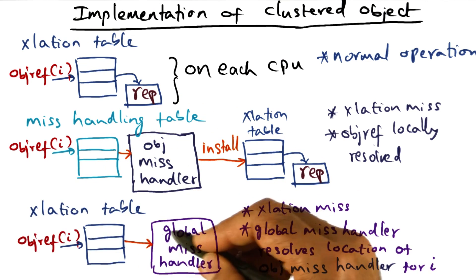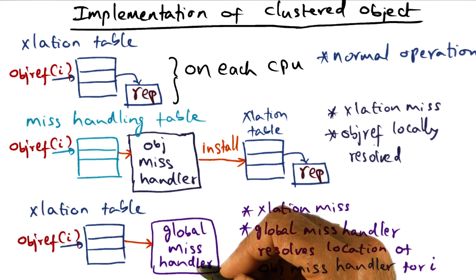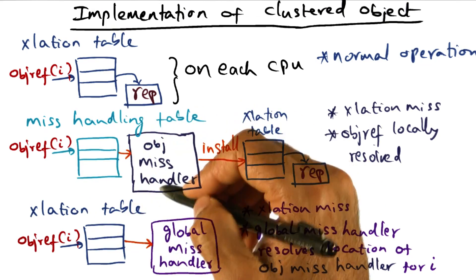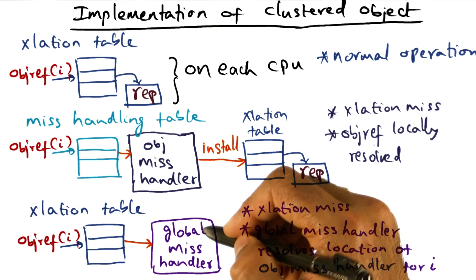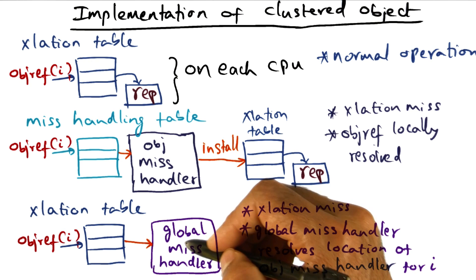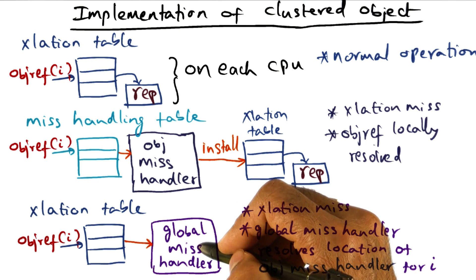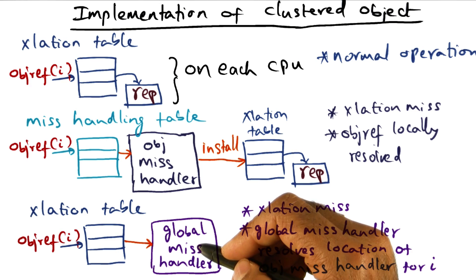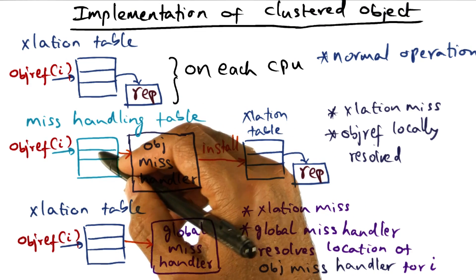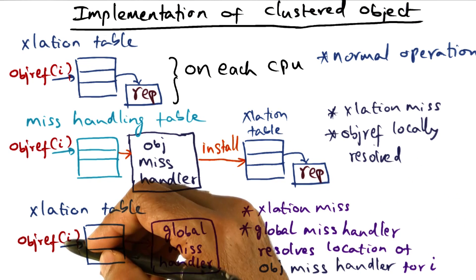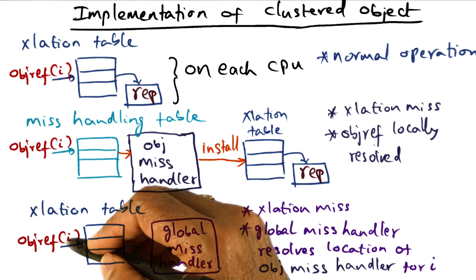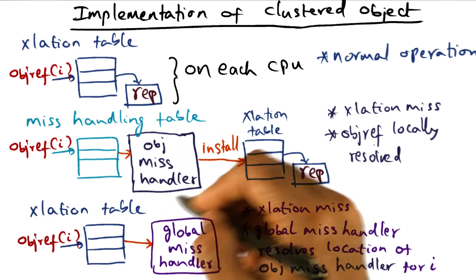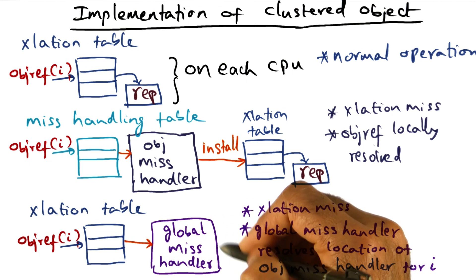What happens in that case? That's why you have a notion of a global mishandler. If the mishandling table does not have the mishandler for that particular object reference, then you go to a global mishandler. This is something that is replicated on every node — every node has its global mishandler. And this global mishandler knows exactly the partitioning of the mishandling table, so it knows how this mishandling table has been partitioned and distributed on all the nodes of the multiprocessor. So if an object reference is presented on a node, the translation table will say that we don't know how to resolve it because the object mishandler doesn't exist here, and therefore we're going to go to this global mishandler.